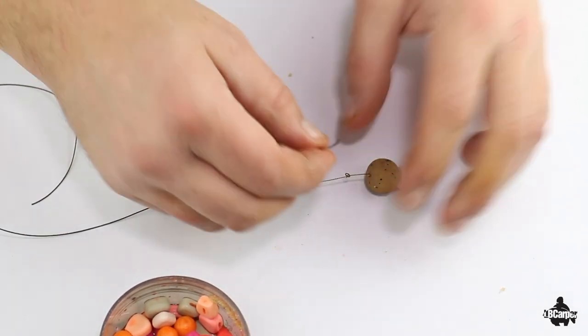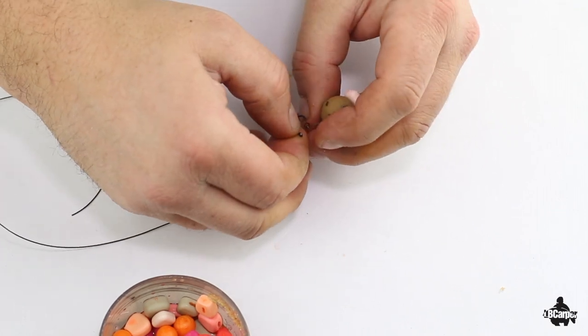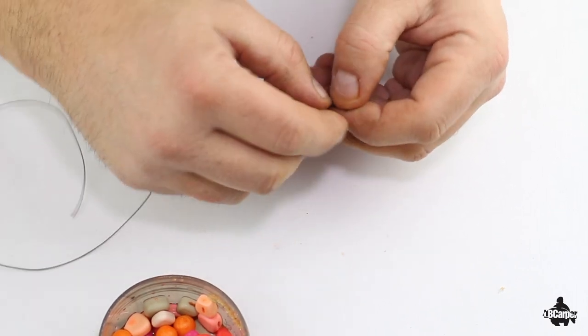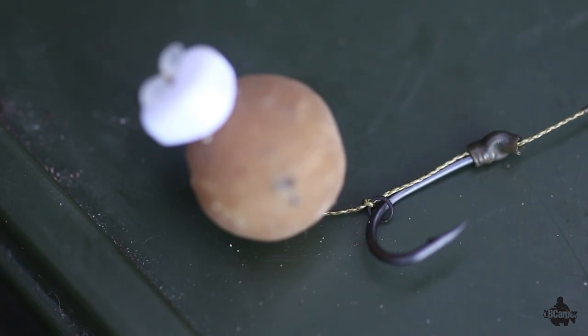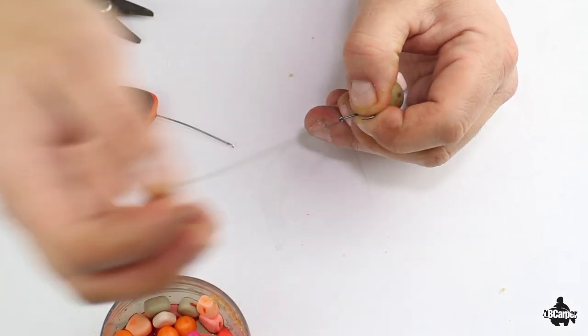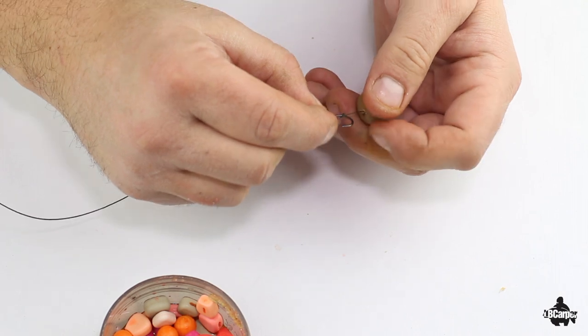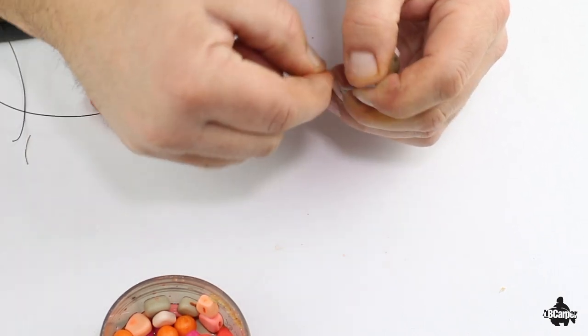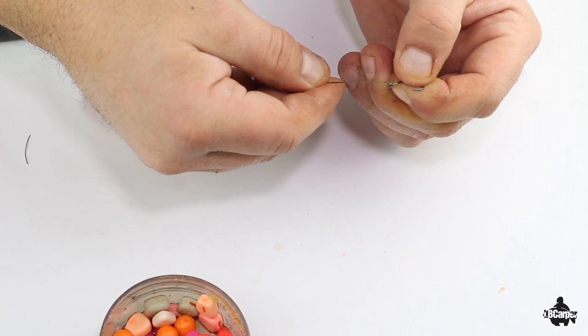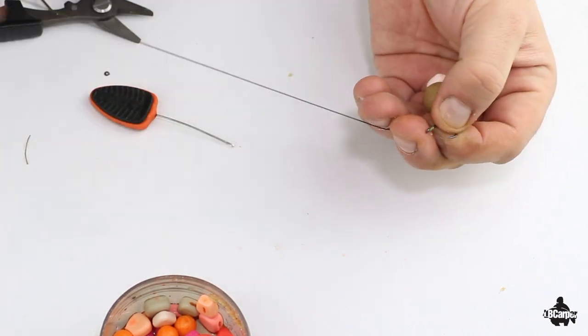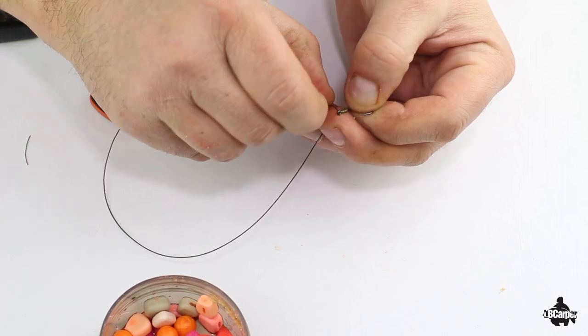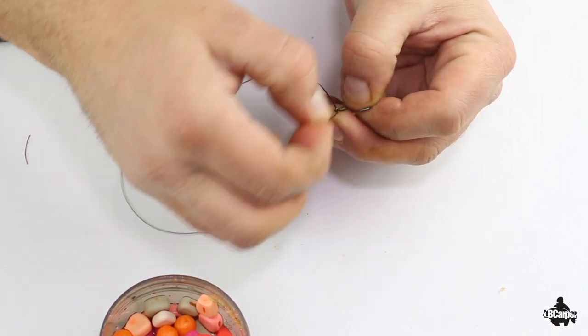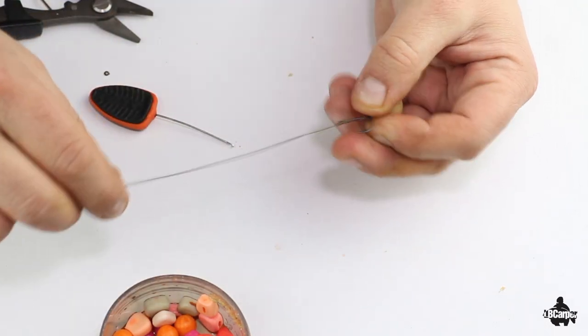We stick him on here so he's at the back end of the bend where the bend starts from the length of the hook. Thread that through the eye. There we go.